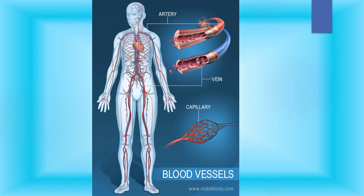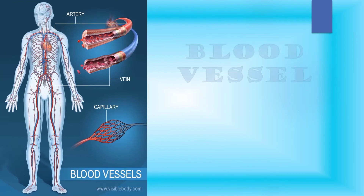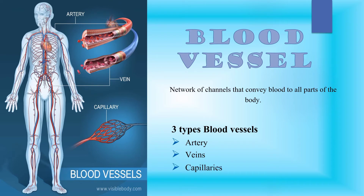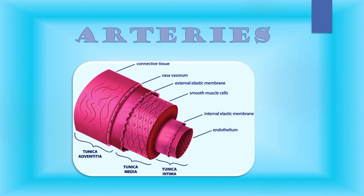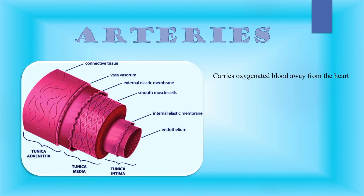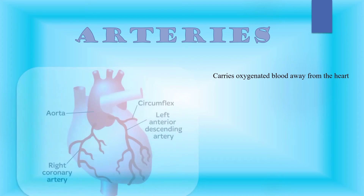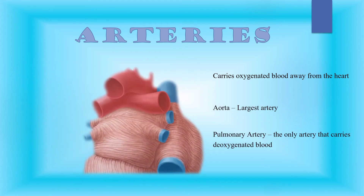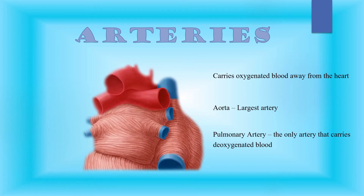Now let us proceed to blood vessels. Blood vessels are connected to the heart. They are the network of channels that convey blood to all parts of the body. There are three types of blood vessels: we have arteries, veins, and capillaries. Arteries are blood vessels that carry oxygenated blood away from the heart. The largest artery is called the aorta, and the only artery that carries deoxygenated blood is the pulmonary artery.